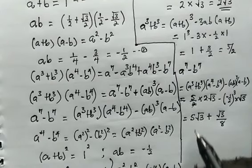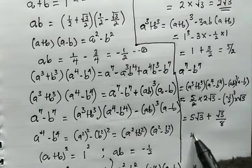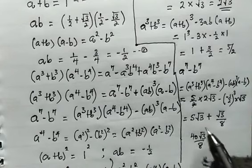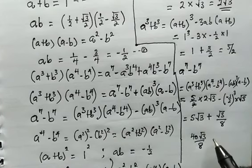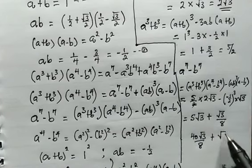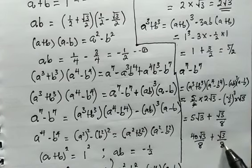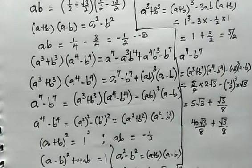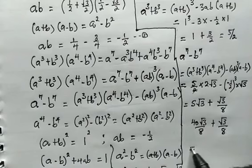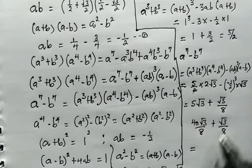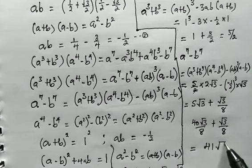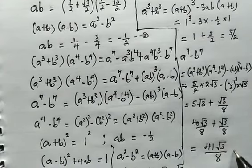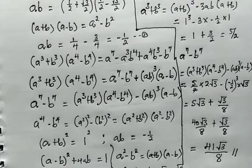Writing 5√3 as 40√3/8 to get a common denominator, we can sum the numerators: 40√3/8 + √3/8 = 41√3/8. So the final answer is 41√3 divided by 8.